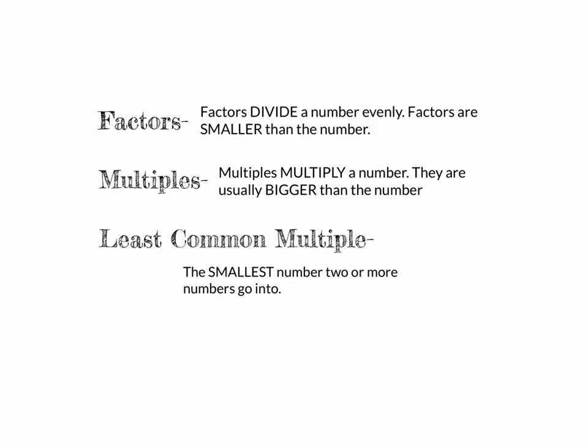In the last week or so we've been working on factors and greatest common factor. Remember that factors are the numbers that divide another number evenly — we typically think of factors as always being smaller than the number we're looking at. Multiples, on the other hand, multiply a number and are usually bigger. For example, the multiples of 10 are 10, 20, 30, 40 — that first multiple is the same as 10, and the rest are bigger. The factors of 10 are 1, 2, 5, and 10.